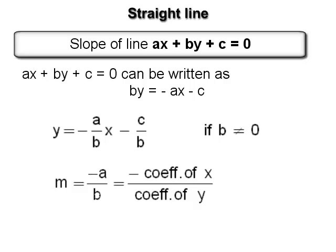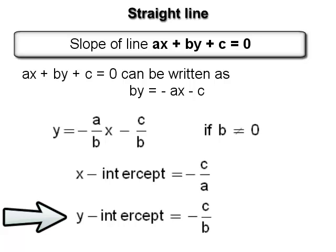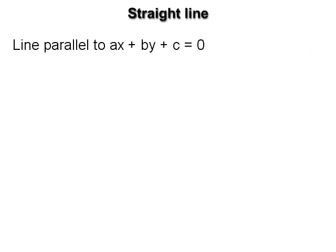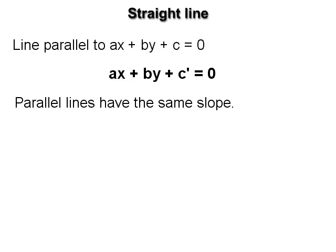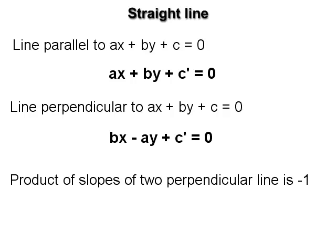To find the x-intercept, put y = 0 in the equation of the line; to find the y-intercept, put x = 0. The equation of any line parallel to ax + by + c = 0 is ax + by + c' = 0, because parallel lines have the same slope. The equation of any line perpendicular to ax + by + c = 0 is bx − ay + c' = 0, since the product of slopes of two perpendicular lines is −1.